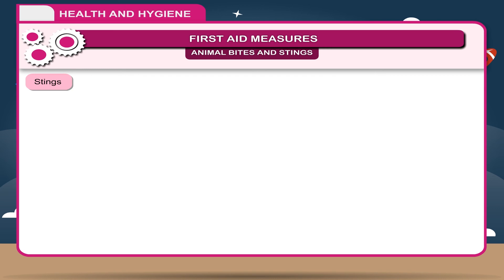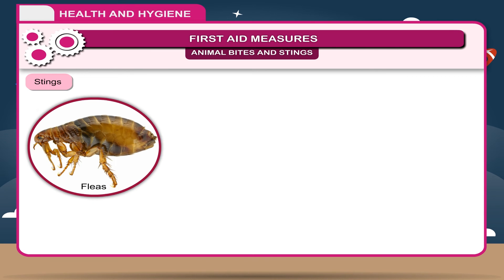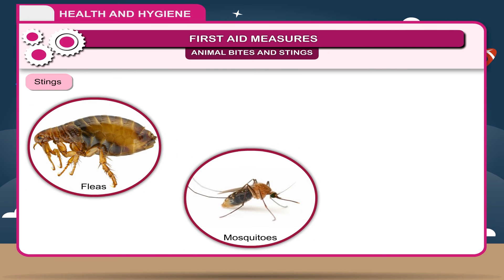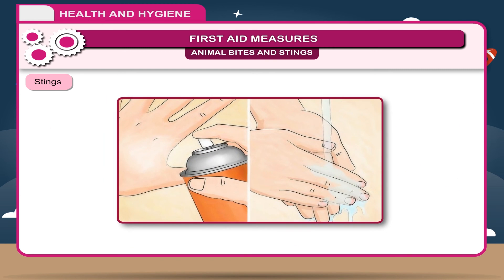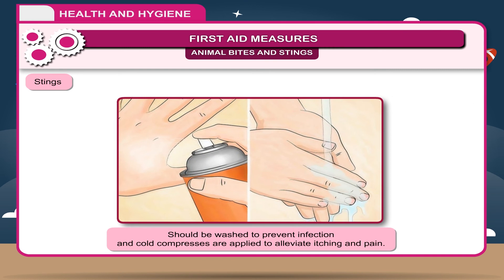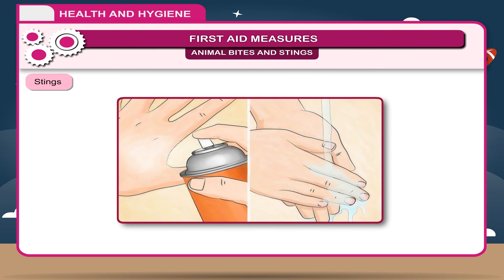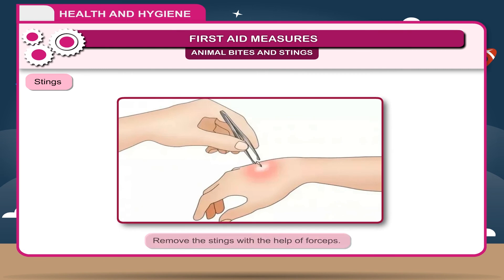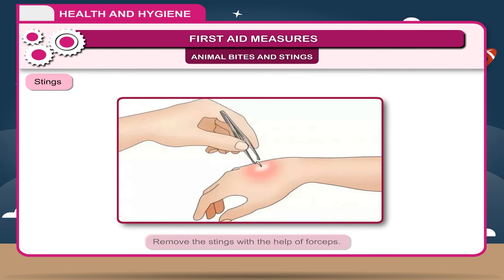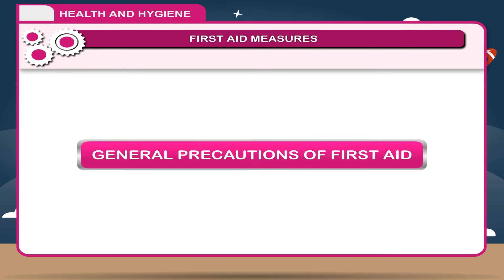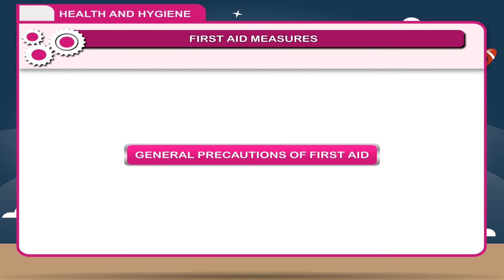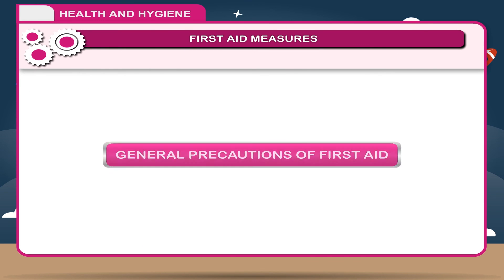Stings. Bites from insects like fleas, mosquitoes, bees, etc. should be washed to prevent infection and cold compresses are applied to alleviate itching and pain. Remove the stings with the help of forceps.